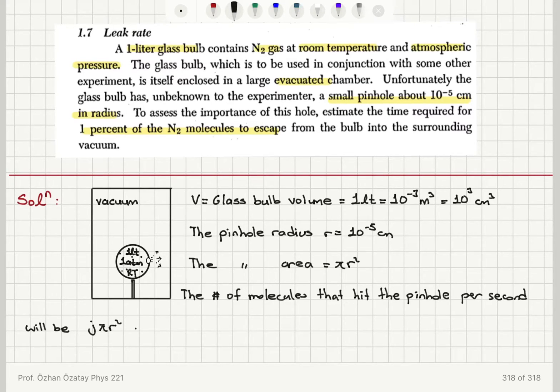And the number of molecules that will hit the pinhole in time t, will be j times pi r squared t. So it's molecular flux times area times the time t.